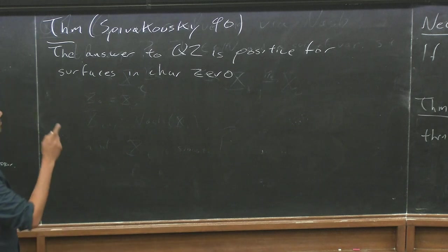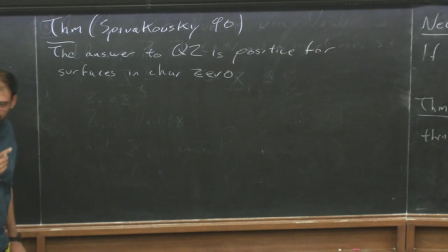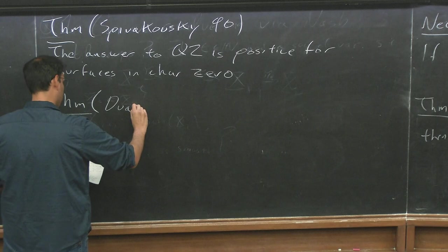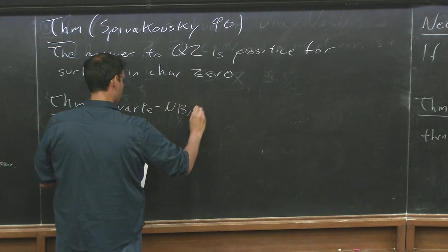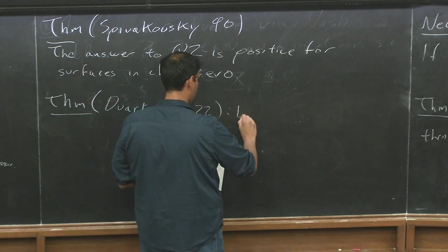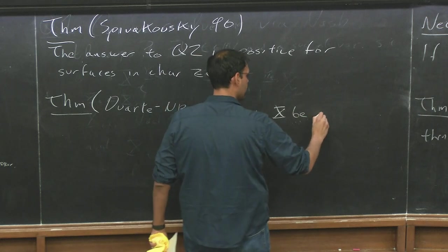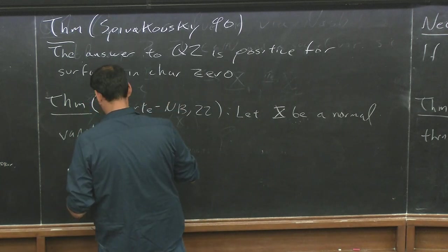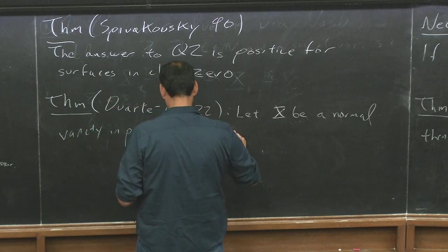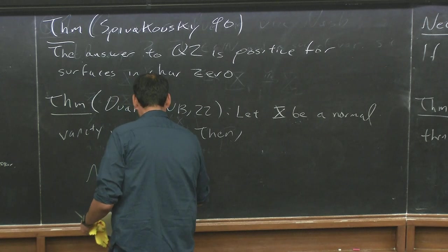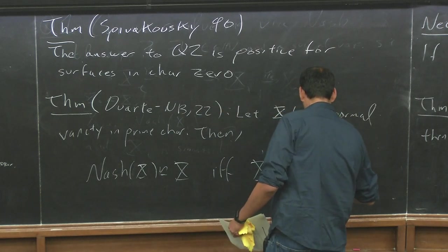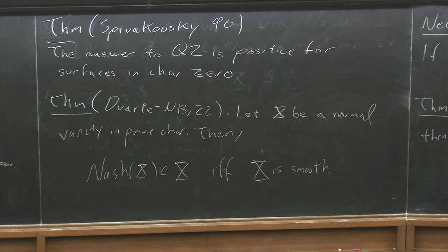So, what about prime characteristic? We're going to say that question one is not meaningful in prime characteristic by the example of Nobile. But in joint work with Daniel, we show that if we take a normal variety in prime characteristic, then the Nash Blow-up of x is isomorphic to x if and only if x is smooth. So question two is meaningful if we just normalize, which is not a big price to pay.